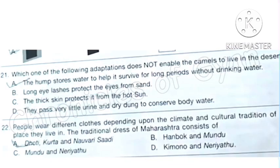Question 21: Which one of the following adaptations does not enable the camels to live in the desert? This is the correct answer.